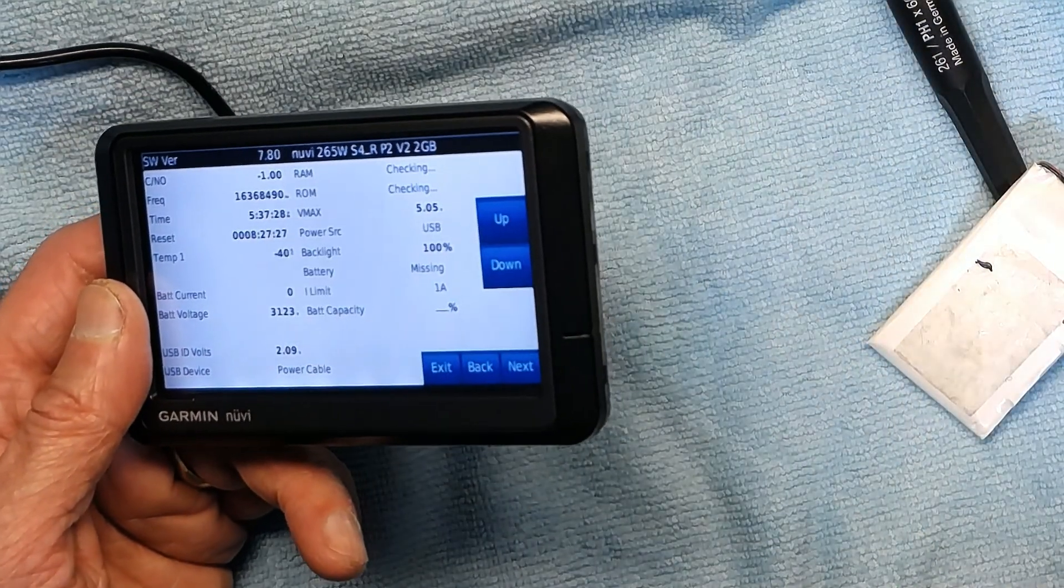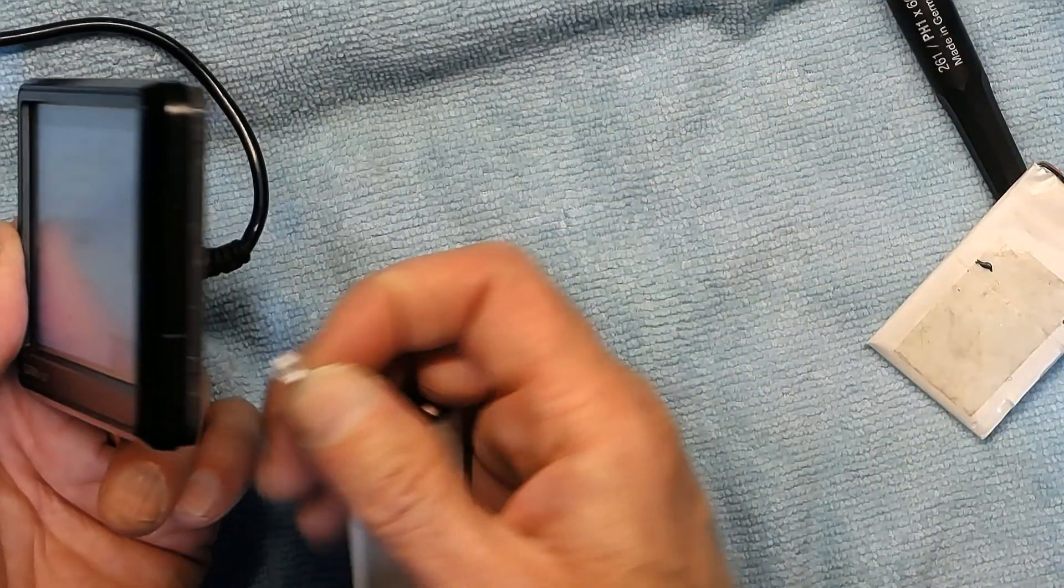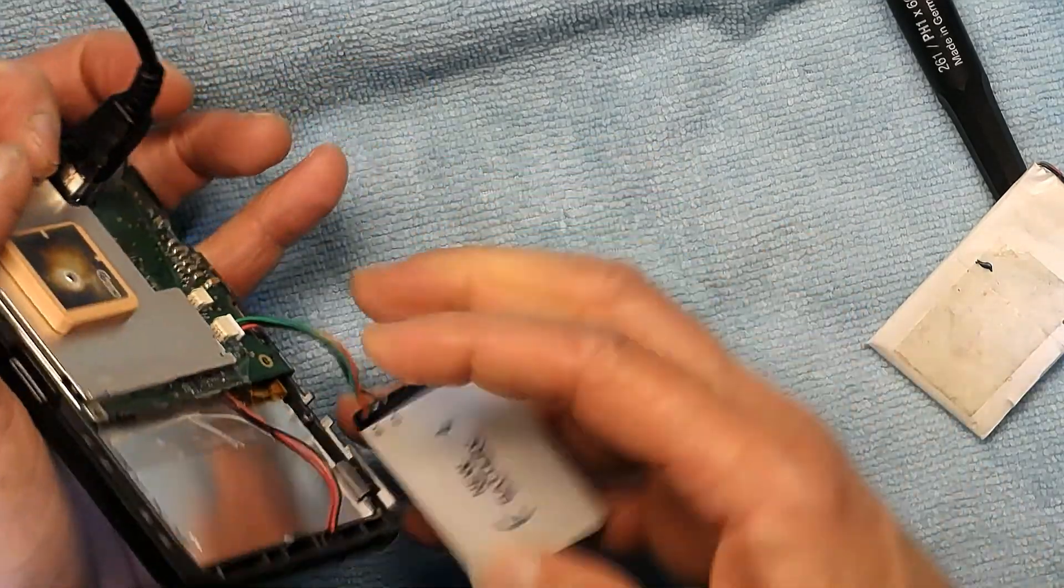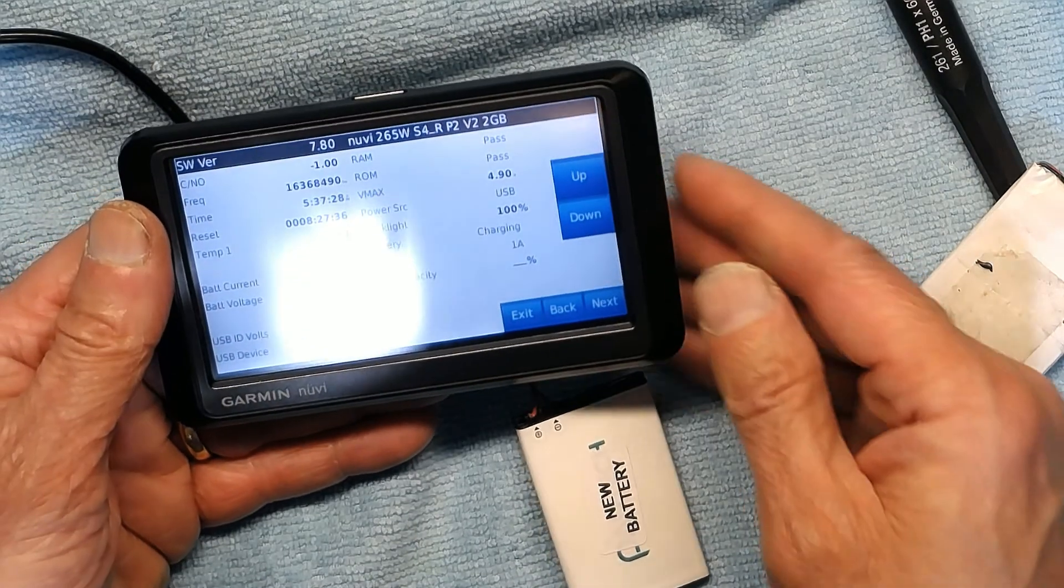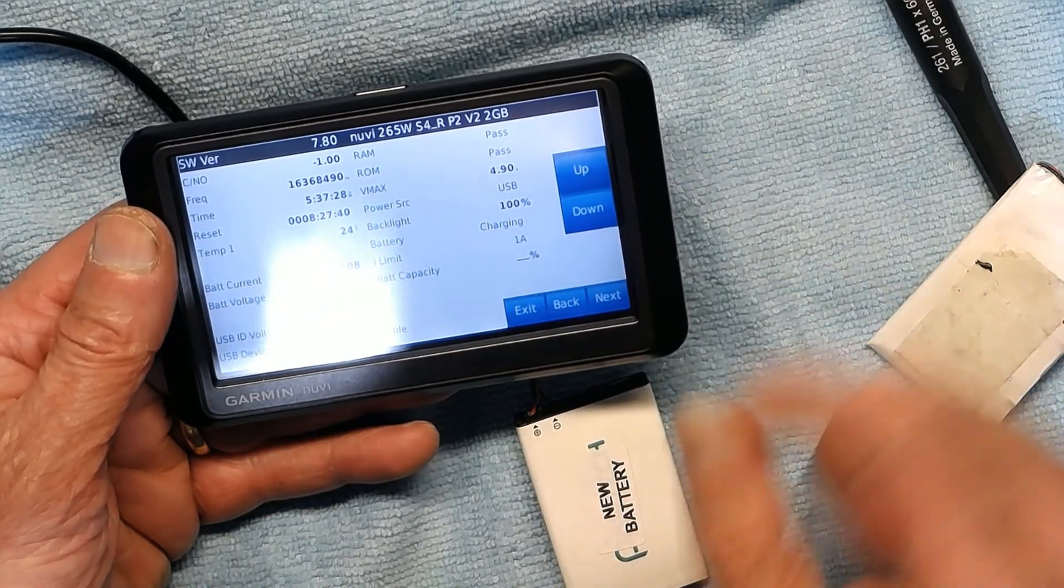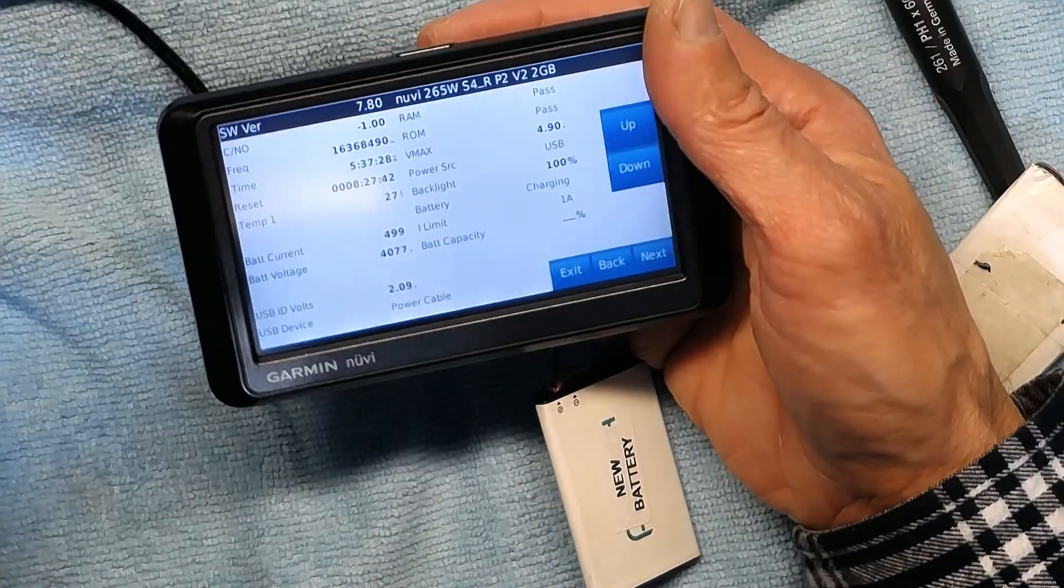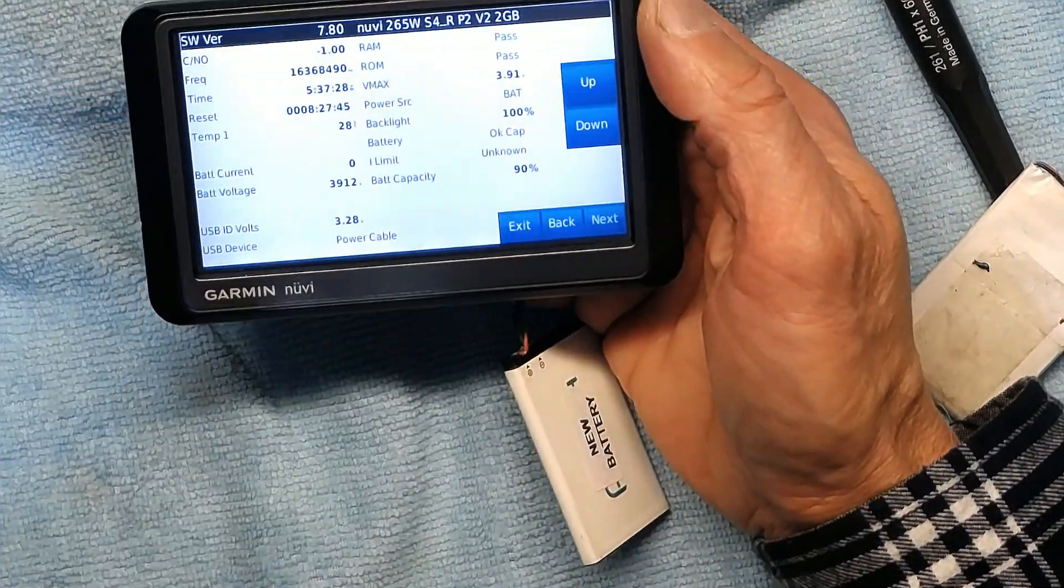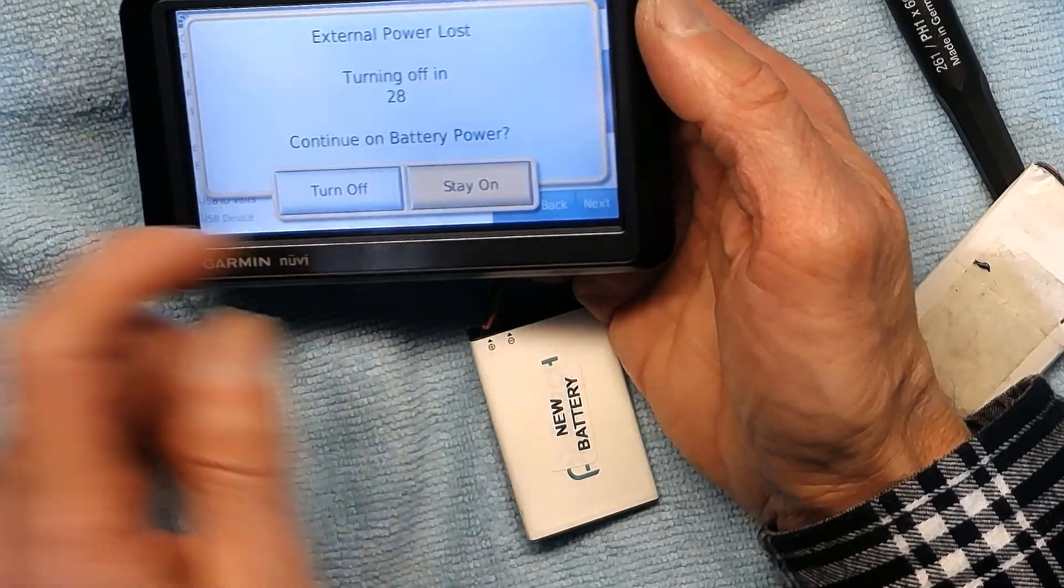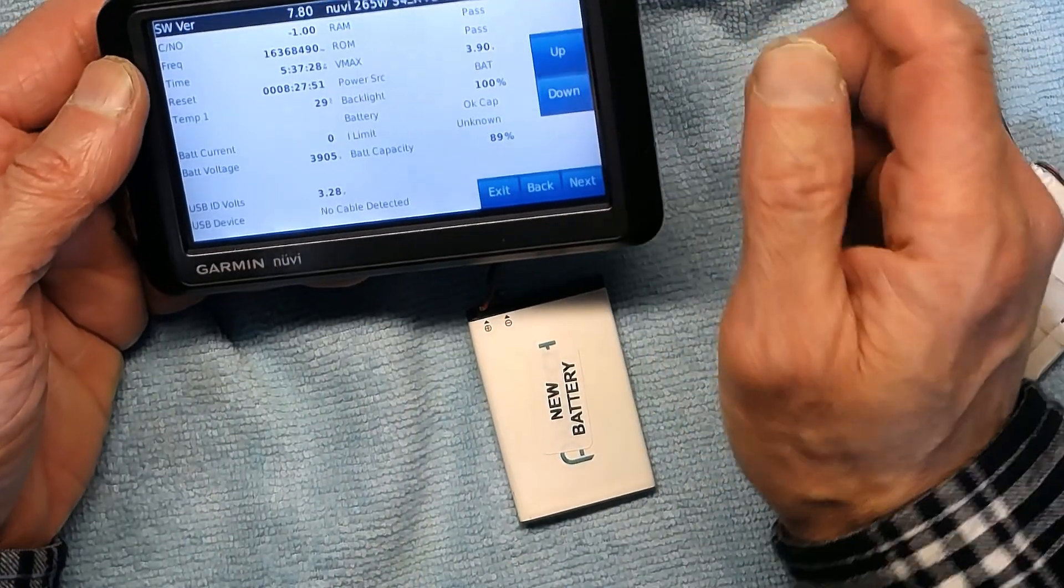Now I'm going to plug in the good new battery. So that's the new battery. Again, charging started. The current is 521, and now I can without any fear unplug it. It's not going to turn off because this is a good battery. It stays on. It's at 89 percent.